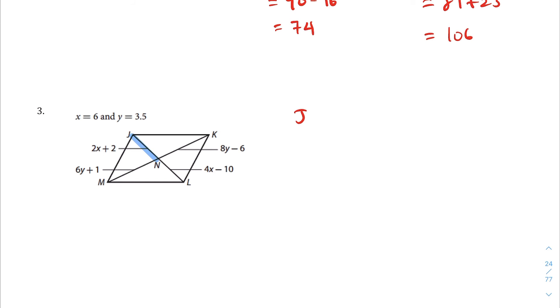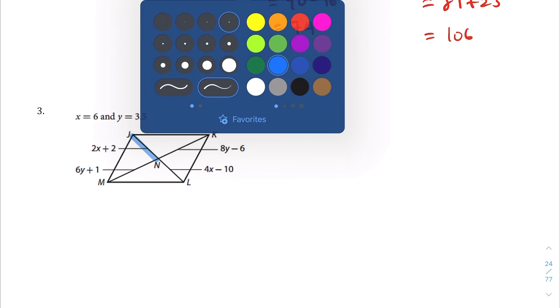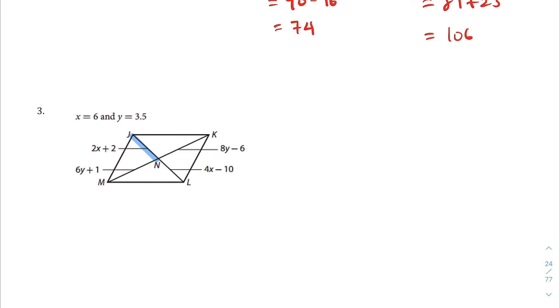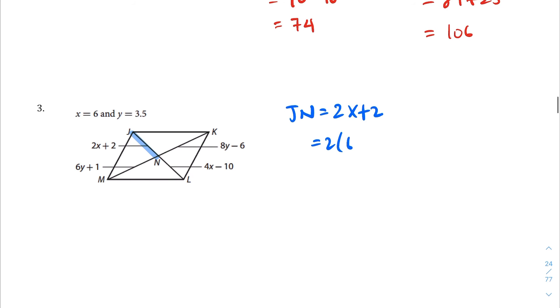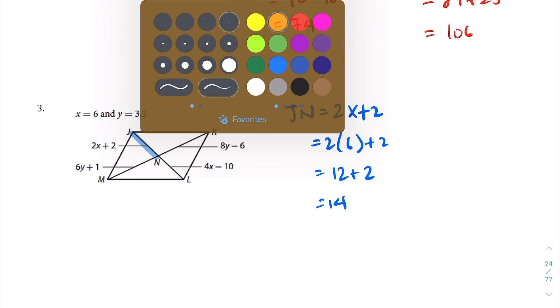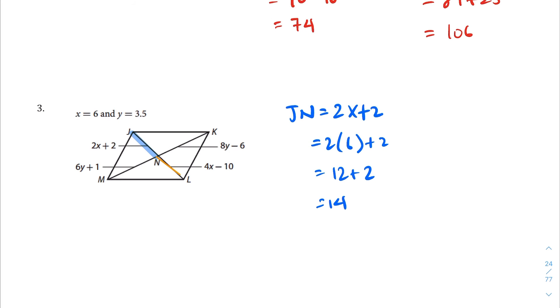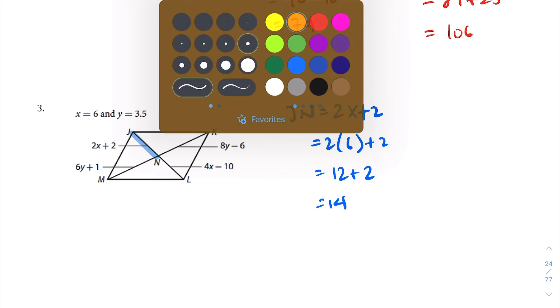So JN, maybe it would help to keep the colors consistent. JN equals 2x plus 2, so instead of x we're putting 6, so 2 times 6 plus 2, 12 plus 2 is equal to 14. And the opposite side, let's make that orange. I wanted the highlighter unfortunately, let's try that.